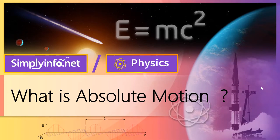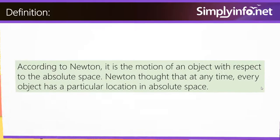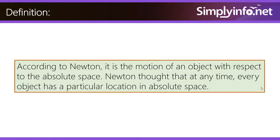What is Absolute Motion? According to Newton, it is the motion of an object with respect to absolute space. Newton thought that at any time, every object has a particular location in absolute space.